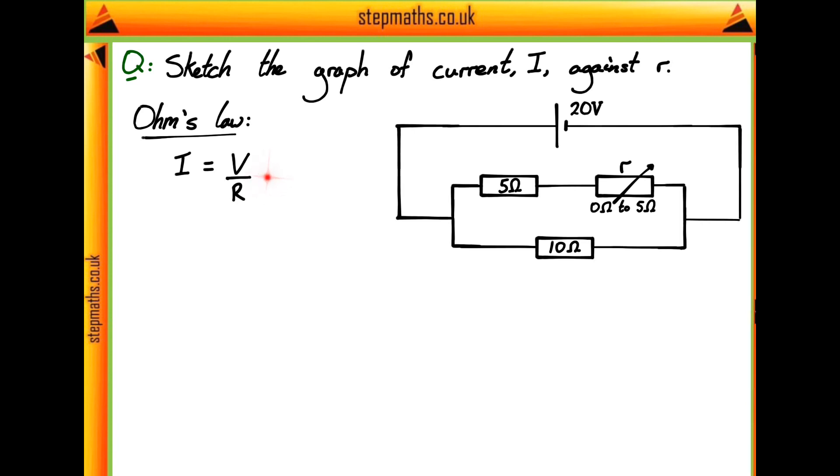We can actually try and apply this law to this circuit here to get the total current through it by taking the total voltage, which of course is going to be 20 volts since that's the voltage across the battery, and dividing it by the total resistance, which is going to be given by the resistance of this section here made up of our three resistors.